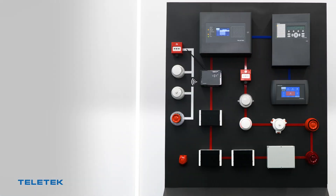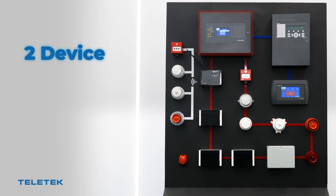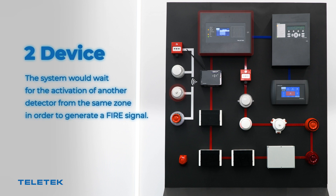Two Device mode: when this mode is selected, any detector activation within the system generates a pre-alarm event to the respective zone. But the system would also wait for activation of another detector from the same zone in order to generate a fire signal.